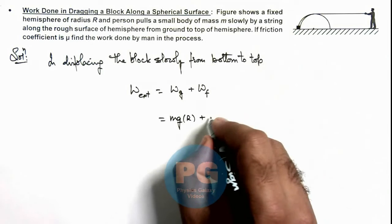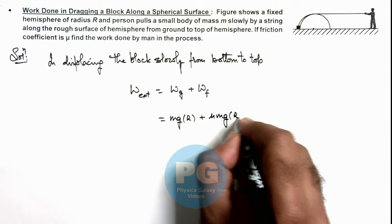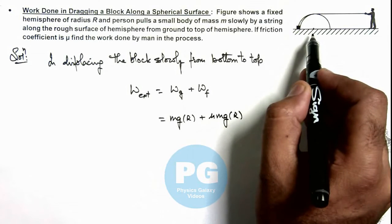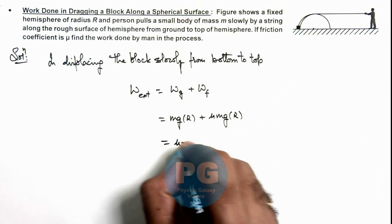So here it will be mu mg multiplied by R, as from bottom to top, again the horizontal displacement will be R.